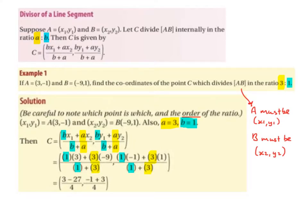So our formula is C equals (bx1 + ax2)/(b + a), (by1 + ay2)/(b + a). We're going to swap the b for 1 because our ratio is 3 to 1. So we're going to have 1 multiplied by x1, which is 3. So 1 multiplied by 3, bring down the plus. Then we have the a, which is 3, because we have 3 to 1 in our ratio.